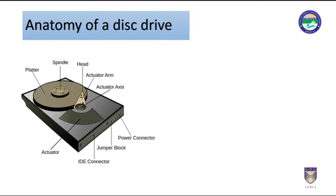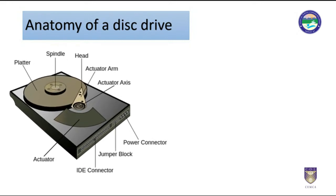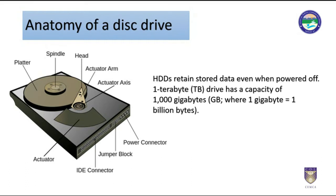The platters are paired with magnetic heads arranged on a moving actuator arm which read and write data to the platter surfaces. Data is accessed in a random access manner, meaning individual blocks of data can be stored or retrieved in any order rather than sequentially. Hard disk drives retain stored data even when powered off. The primary characteristics of a hard disk drive are its capacity and performance.